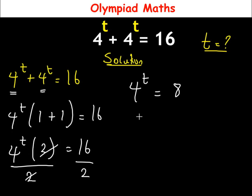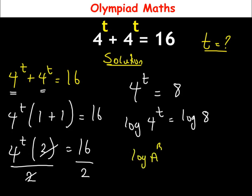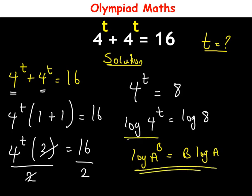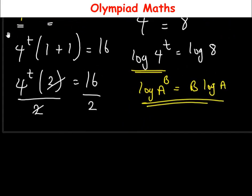At this junction we introduce logarithm to both sides of the equation: log(4^t) = log(8). There is a rule of logarithm that log(a raised to power b) equals b times log(a). Applying this rule, our t comes in front, giving us t times log(4) equals log(8).